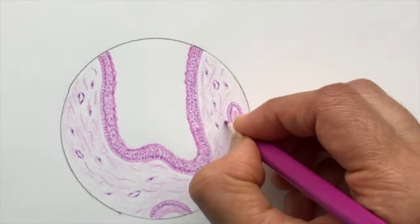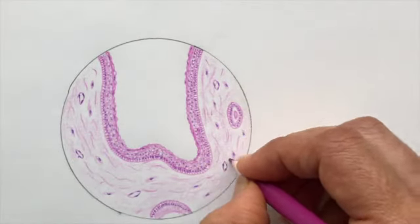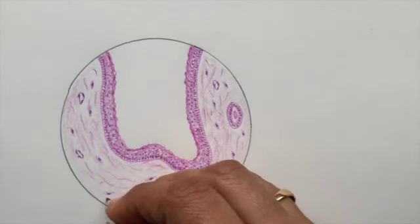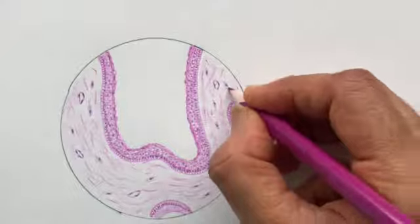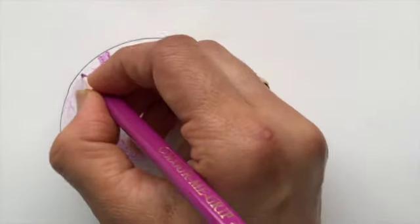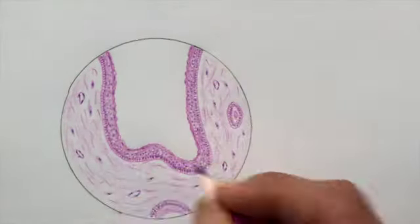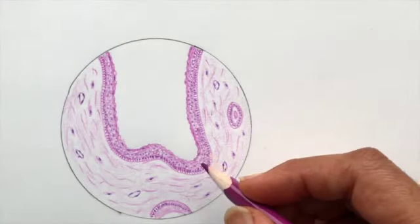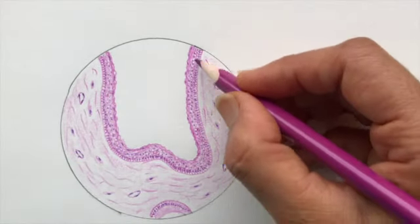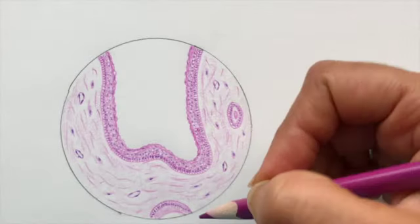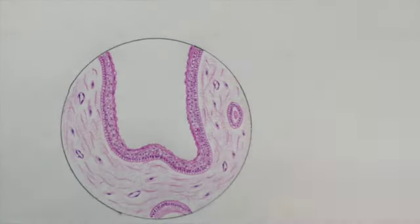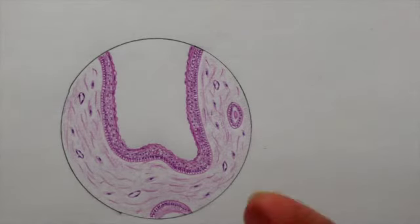As we discussed in the theory part, the inflammatory component is not much in these developmental cysts, especially in odontogenic keratocyst. This epithelium forms keratin because this is from the functional or pre-functional dental lamina cells, so they differentiate to a cell which produces keratin. This is what will be the structure of odontogenic keratocyst histopathologically. Now we shall start labeling these structures.